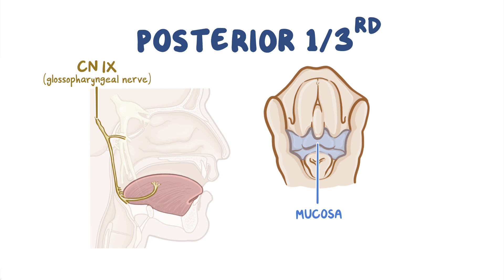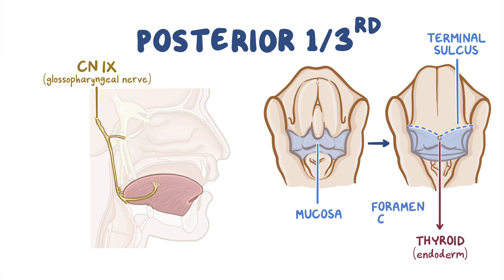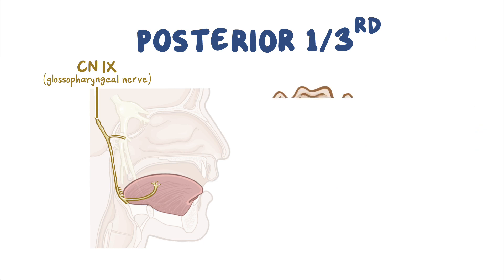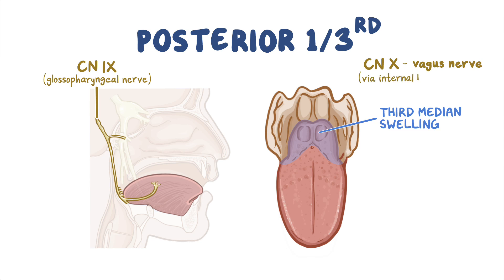The region between the anterior two-thirds and posterior one-third contains a v-shaped depression called the terminal sulcus. At the tip of the terminal sulcus, the endoderm descends downwards and develops into the thyroid gland. This descent of the endoderm creates a tiny sac-like structure called the foramen cecum. The posterior-most part of the tongue develops from a third median swelling arising from the fourth pharyngeal arch, and this area receives its innervation from the tenth cranial nerve, the vagus nerve, via the internal laryngeal nerve.